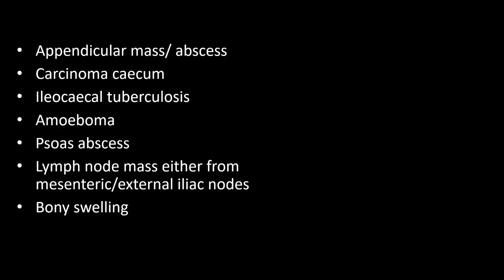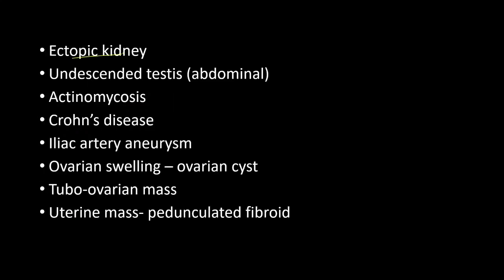The differential diagnoses of right iliac fossa mass include: appendicular mass or abscess, carcinoma cecum, ileocecal tuberculosis, amoeboma, psoas abscess, lymph node mass either from the mesenteric or external iliac nodes, any bony swelling, ectopic kidney, undescended testis (usually abdominal), actinomycosis, Crohn's disease, iliac artery aneurysm, ovarian swelling like ovarian cyst, tubo-ovarian mass, and uterine mass.